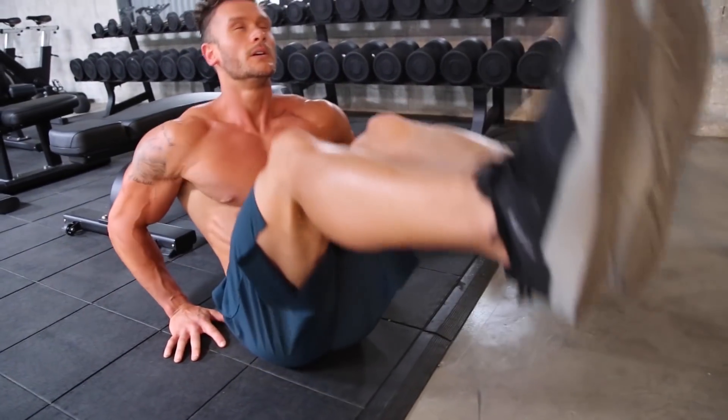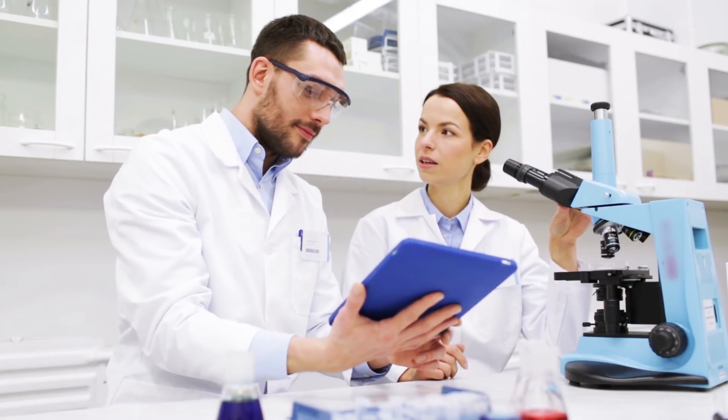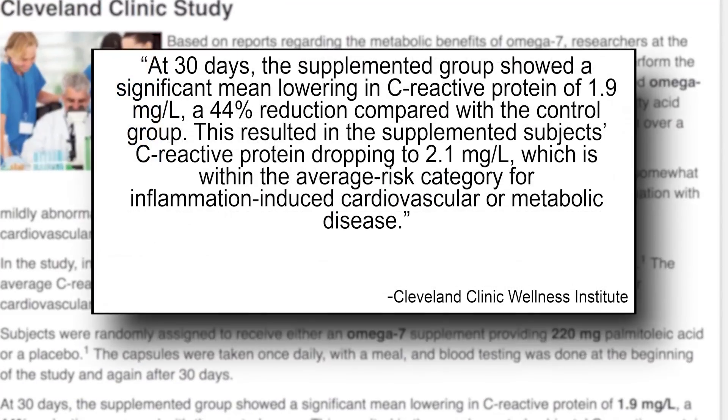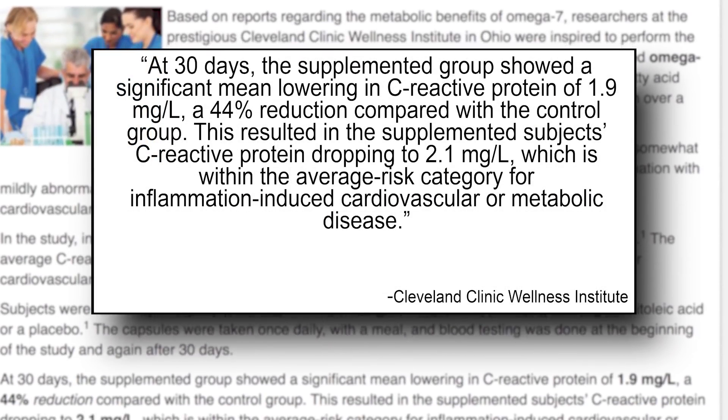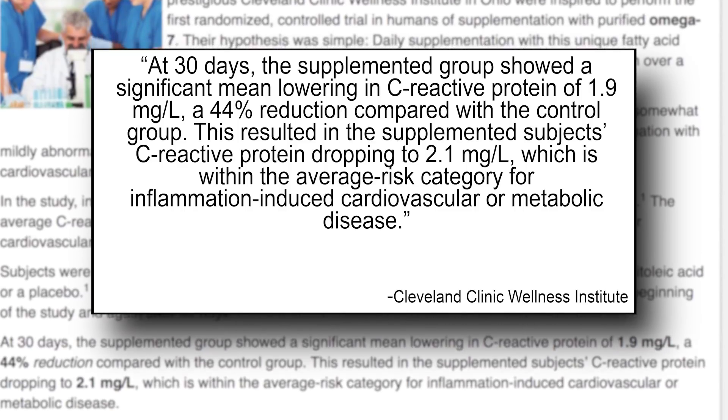Let me drop some knowledge when it comes down to inflammation, because inflammation affects how you recover from your workouts and how much fat you actually burn. The Cleveland Clinic did a study — they took a large group of people, predominantly overweight and suffering with inflammation, and put them on a 30-day study. Half the group got a placebo, and the other half got 220 milligrams of omega-7s every day. At the end of 30 days, the group that took the omega-7s ended up having a 44% reduction in C-reactive protein levels — a direct correlation with reducing inflammation. Pretty powerful.